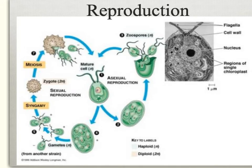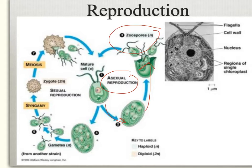When we talk about reproduction, this gets very complicated with plants, so we're going to start with some basic stuff. With asexual reproduction, the individual undergoes mitosis and produces offspring called zoospores, which are haploid. So we start with haploid, we end up with haploid — it's just mitosis, and we end up with identical offspring.